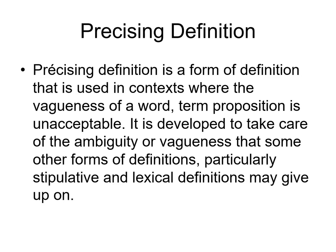Precising Definition. Precising Definition is a form of definition that is used in contexts where the vagueness of a word, term, or proposition is unacceptable. It is developed to take care of the ambiguity or vagueness that some other forms of definitions — particularly stipulative and lexical definitions — may give up on.